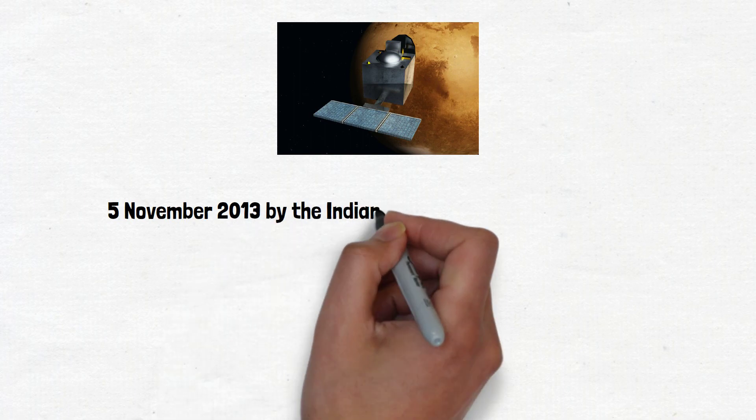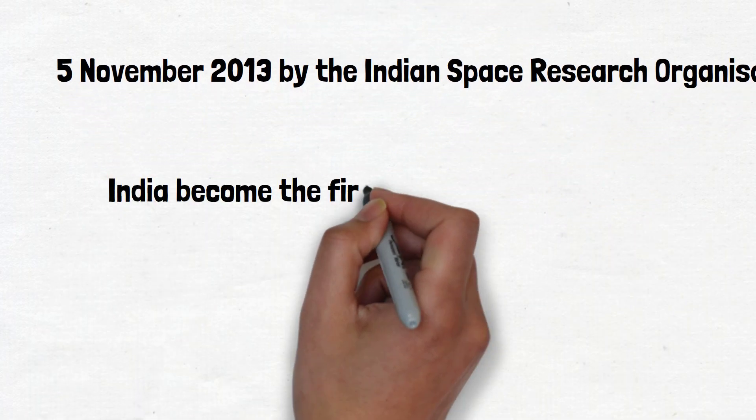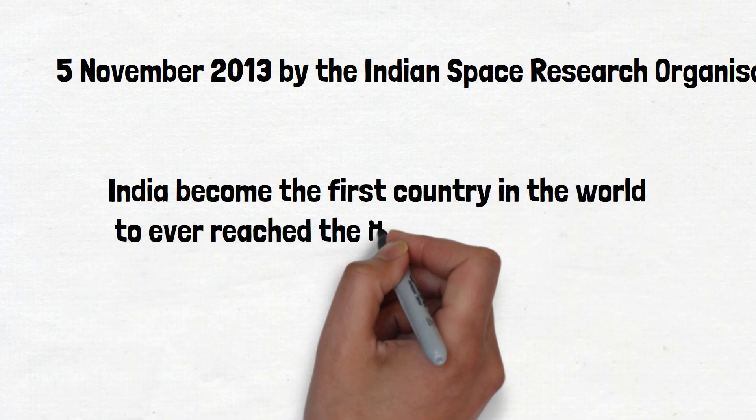The Mars Orbiter mission was launched on November 5, 2013 by the Indian Space Research Organization. It was historical because India became the first country in the world to ever reach Mars in first attempt.